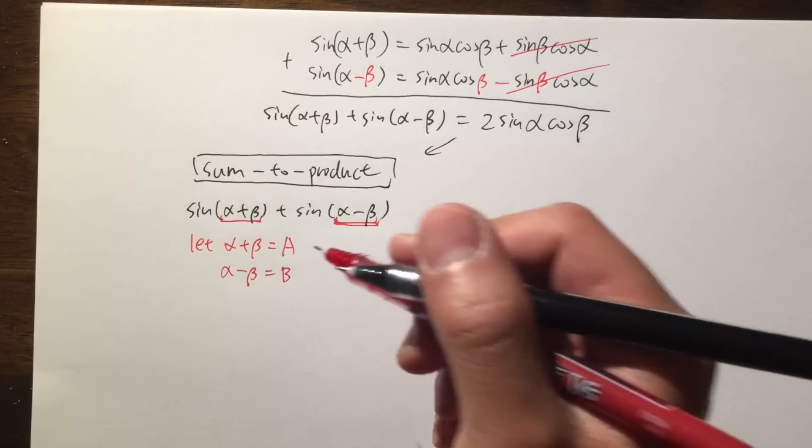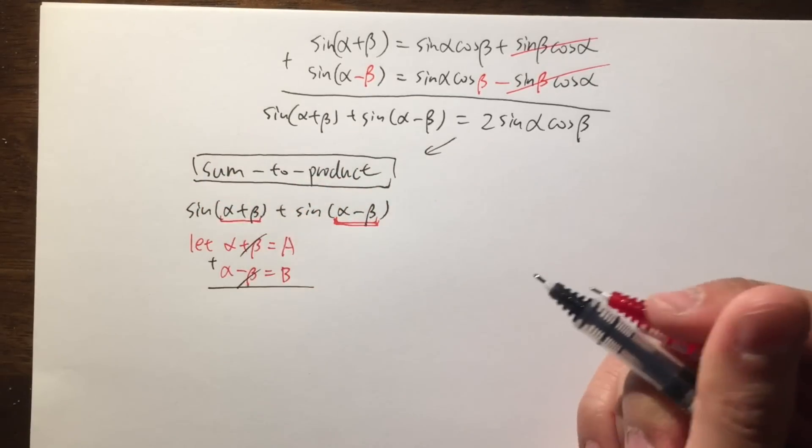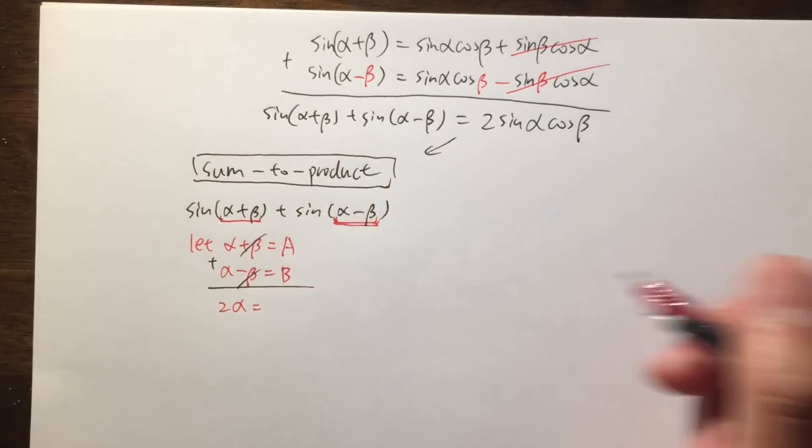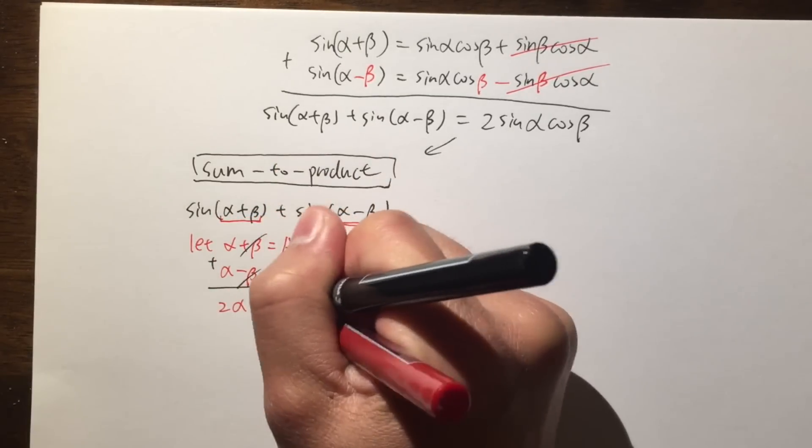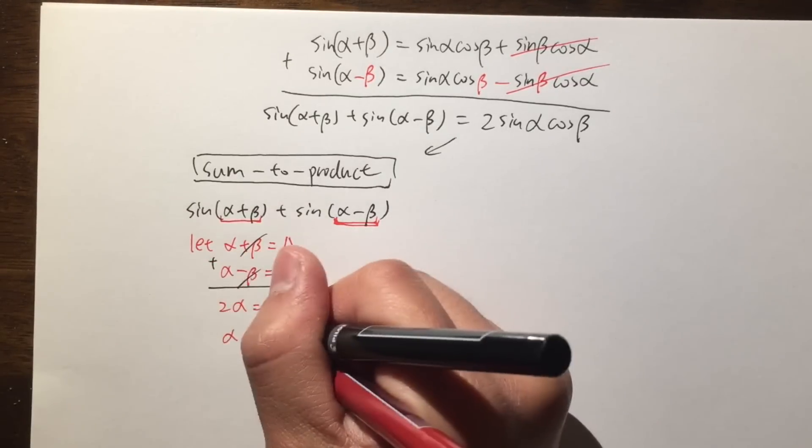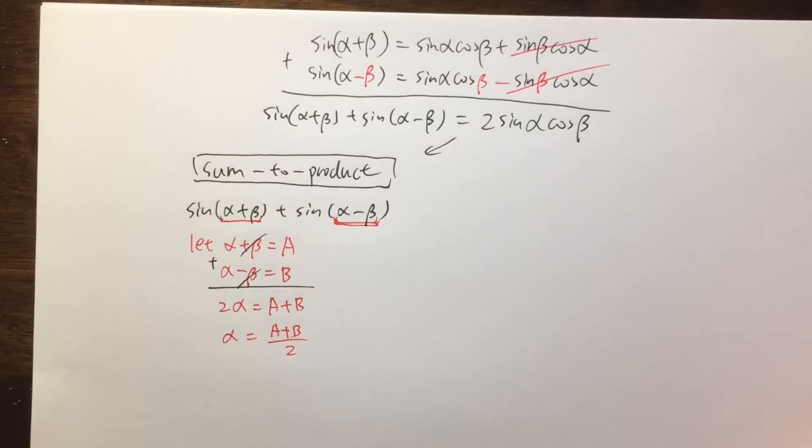Okay, that's actually not bad to do at all. Because if you look at this, we can just add them up. So that this and that will cancel right away. And we see 2 alpha is equal to A plus B. And of course, we can divide both sides by 2. So we get alpha is equal to A plus B all over 2, right? Okay.